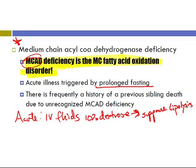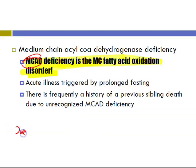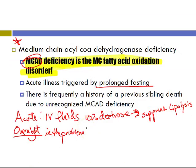Chronic therapy for MCAD consists of avoiding fasting — simply adjusting the diet so overnight fasting is limited to less than 10–12 hours. There is frequently a history of previous sibling death due to unrecognized MCAD deficiency. Remember, this is the most common fatty acid oxidation disorder and you will be tested on it.